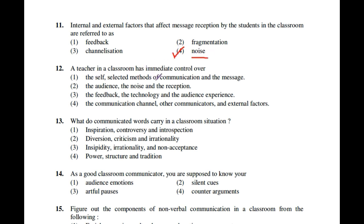Question number 12: A teacher in a classroom has immediate control over which of the following — self-selected methods of communication and the message; the audience, the noise and the reception; the feedback, the technology and the audience experience; the communication channel, other communicators and external factors? The correct option is the first one: self-selected methods of communication and the message.